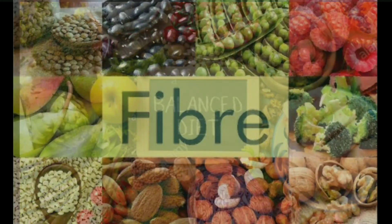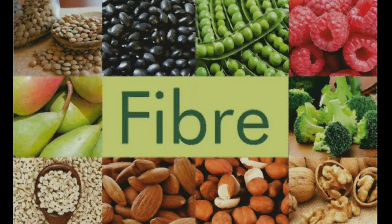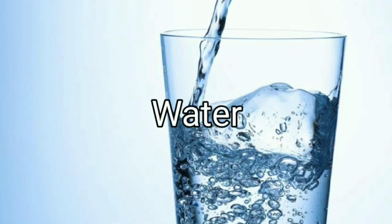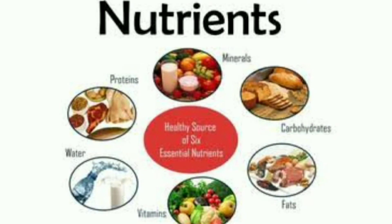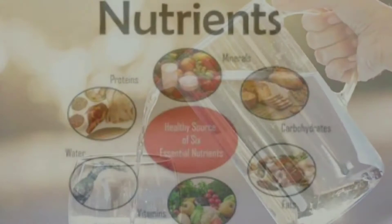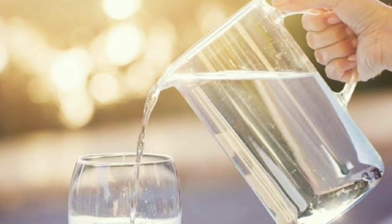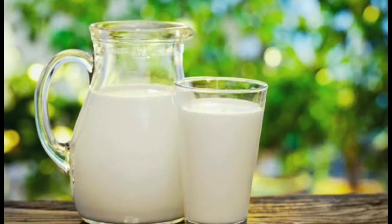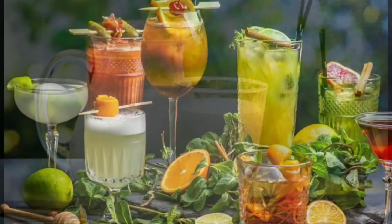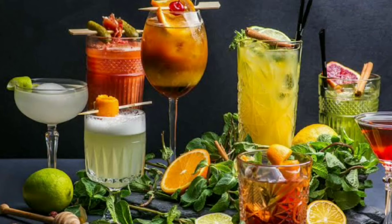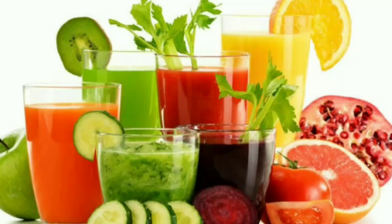Fiber. If we select a daily diet which includes vegetables, fruits, sprouts, and cereals according to the pyramid, we will also get fiber in sufficient quantity. Water. Along with all the other nutrients, the body also needs an adequate supply of water. For this purpose, we must drink milk, buttermilk, lemon juice, sherbet, fruit juices, and plenty of water.